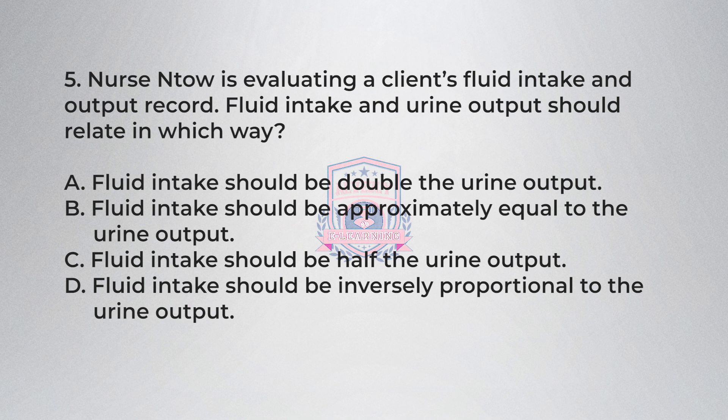Question 5: Nurse Ento is evaluating a client's fluid intake and output record. Fluid intake and urine output should relate in which way? A) Fluid intake should be double the urine output, B) Fluid intake should be approximately equal to the urine output, C) Fluid intake should be half the urine output, D) Fluid intake should be inversely proportional to the urine output.